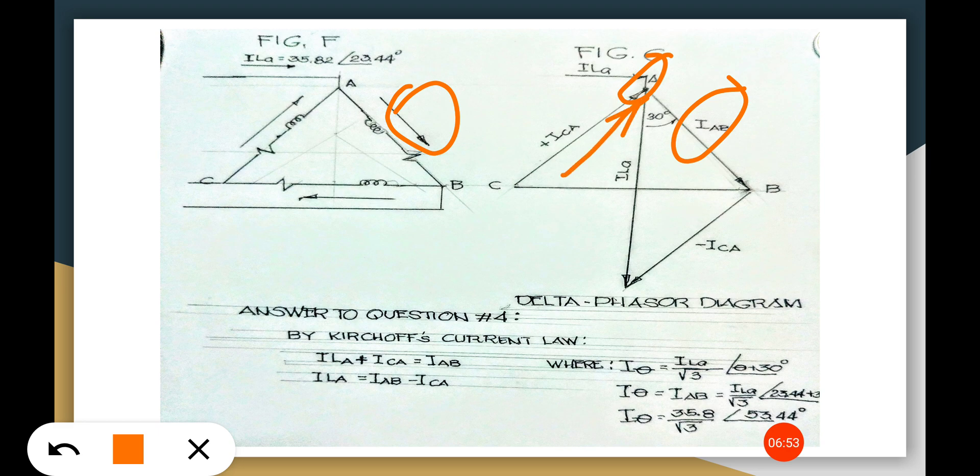ILa and Ica will be ILa plus Ica minus the Iab here because it is moving away from the node. So what does it mean?